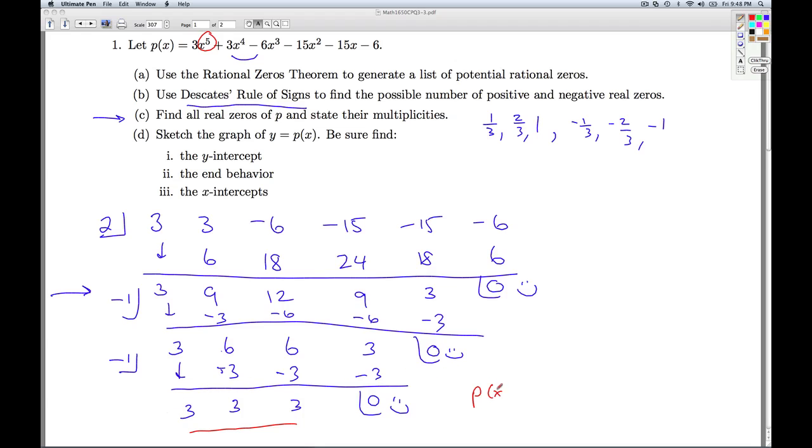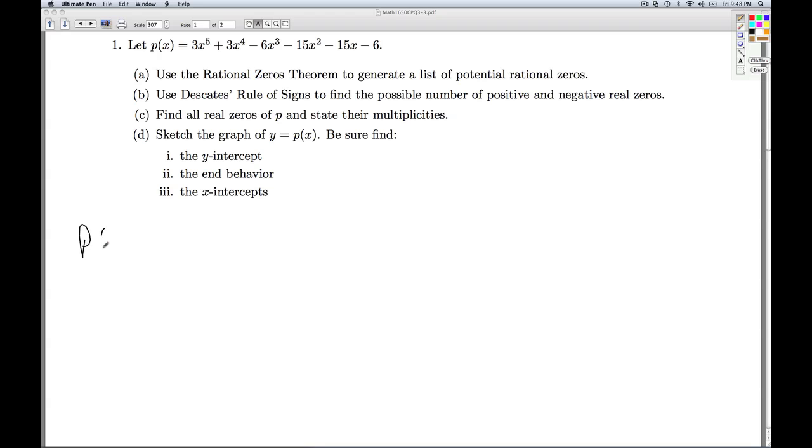So at this stage in the game, we've factored p(x) as (x - 2) times (x + 1) quantity squared times (3x² + 3x + 3). So working with that polynomial, to find the zeros of this polynomial, we set this equal to 0.